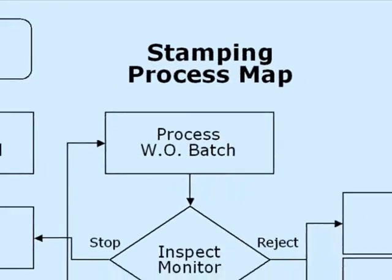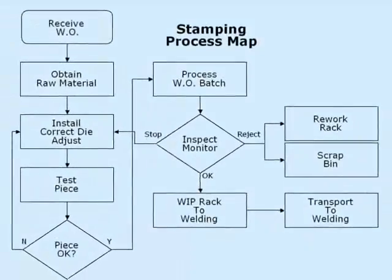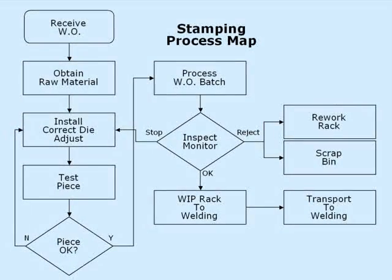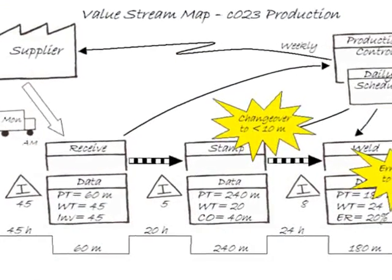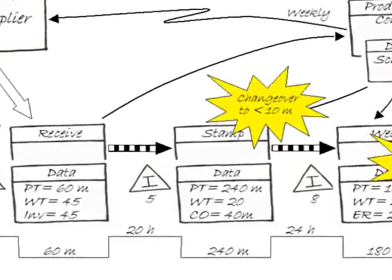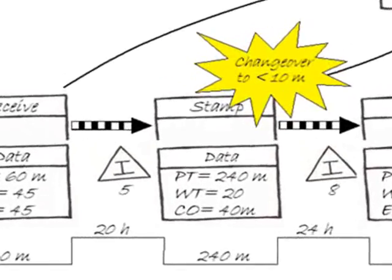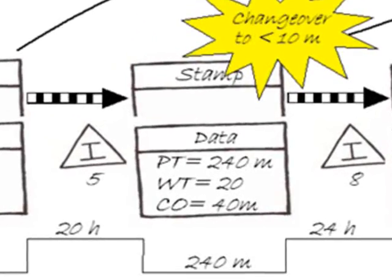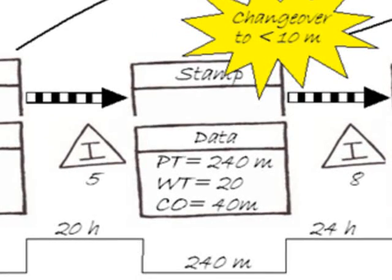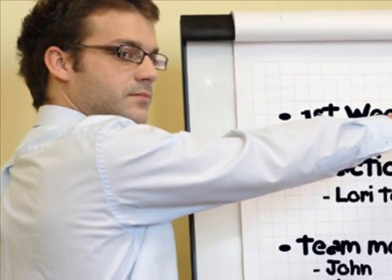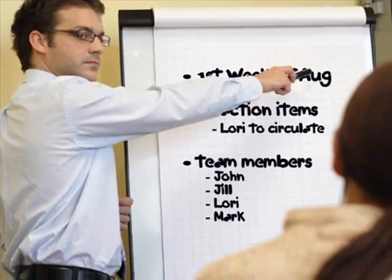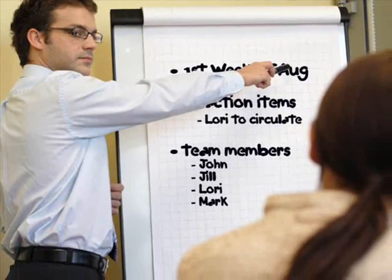In addition to the process steps, the value stream map also contains data such as process times, wait times, and work in process inventory levels — information not generally found on a simple process map. This additional information helps the team to locate and quantify improvement opportunities.